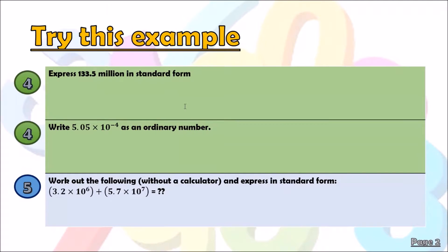Let's look at some examples. Number one — grade four question: express 133 million point five in standard form. I always work one step at a time. First I write 133.5, and because there's a million there will be six zeros, so it becomes 133.5 times 10 to the power of 6.